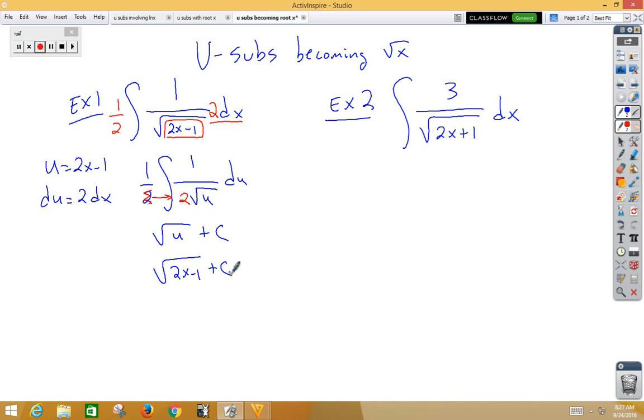Now some people don't see sliding that back in, so an alternate way to do that problem, if I have 1 over root u du, would be to go ahead and then divide by 2, multiply by 2. Then you'll notice those 2's cross out. You still get root u plus c, which then would be root 2x minus 1 plus c.